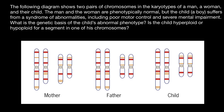What is the genetic basis of the child's abnormal phenotype? Is the child hyperploid or hypoploid for a segment in one of his chromosomes? This is the mother's phenotype, this is the father's phenotype, here is the child's phenotype. The mother doesn't suffer from any genetic disorders, the father doesn't suffer from any genetic disorders, but the child does suffer.